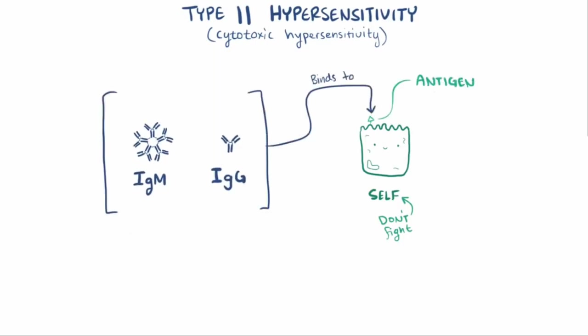There are two types of antigens involved with type 2 hypersensitivity. Intrinsic, meaning an antigen that the host cell normally makes, or extrinsic, which is an antigen from an infection or even some medications, like penicillin, that gets attached to the host cell.